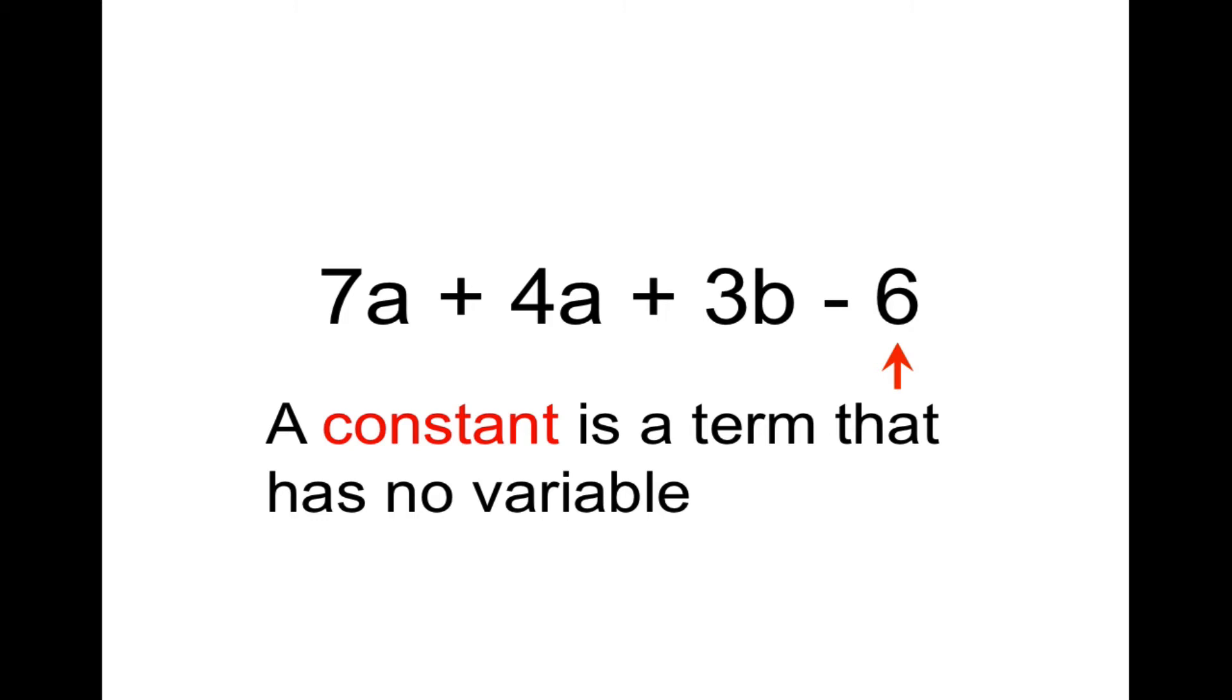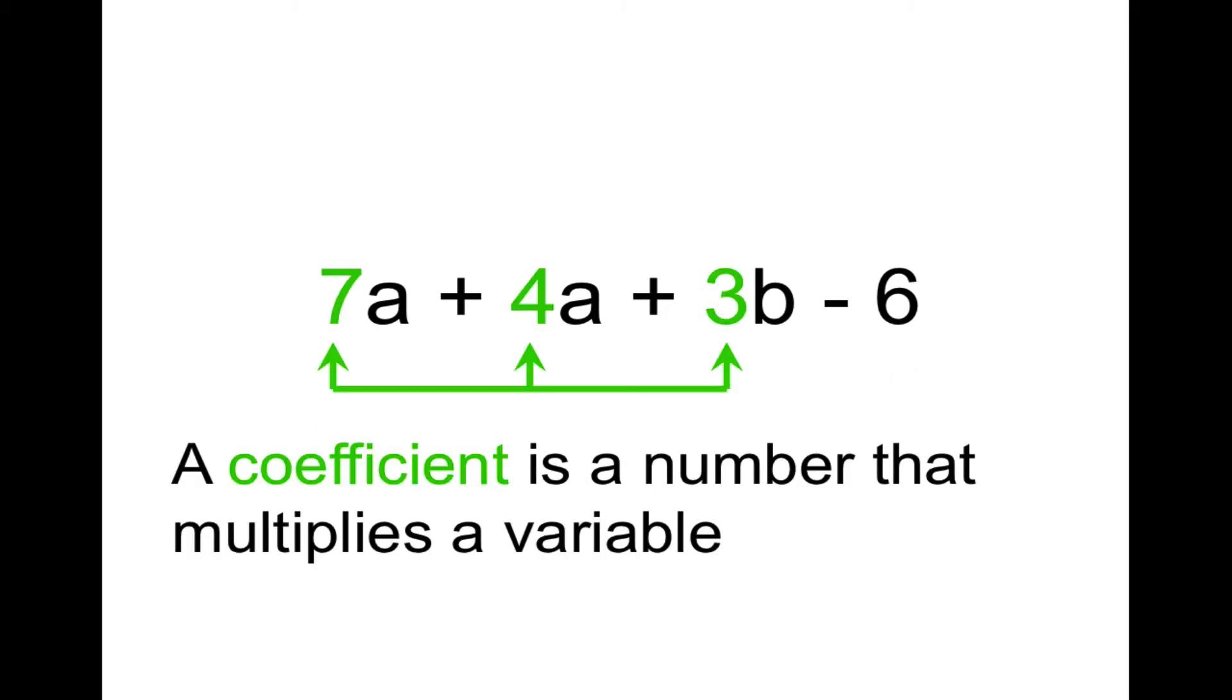What is a constant? Next definition: coefficient. A coefficient is like a counter, it's counting the variable, how many a's, how many b's. A coefficient is a number that multiplies the variable, and that means it comes right in front of it. What is a coefficient?